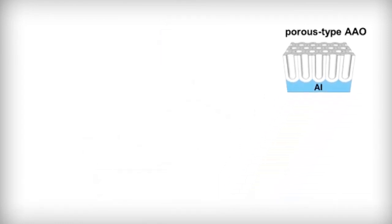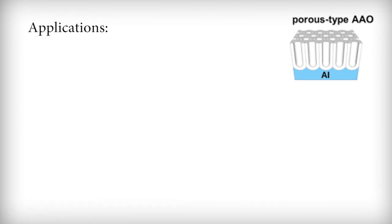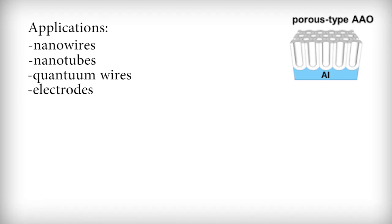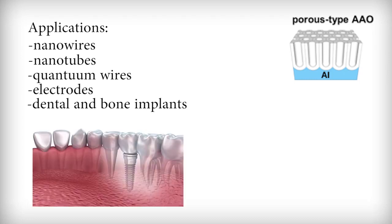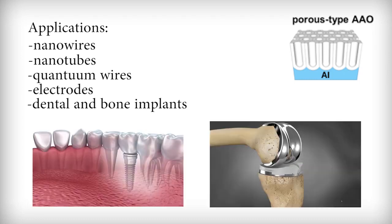Porous alumina is one of the most prominent template materials for synthesis of nanowires or nanotubes with monodispersed controllable diameter and high aspect ratios. The potential applications in electrochemical devices, quantum wires, and electrodes for rechargeable lithium batteries are just some of the numerous areas that have been explored. Another interesting characteristic is its biological properties, and for years it has been used in dental and bone implants due to its biocompatibility and ease of integration with medical implants.